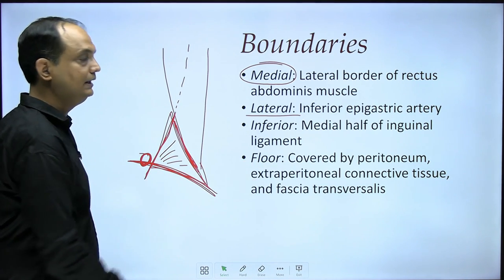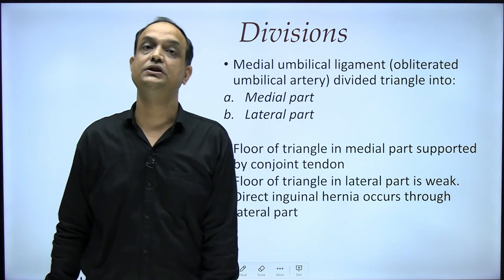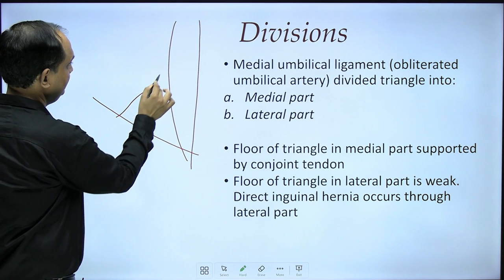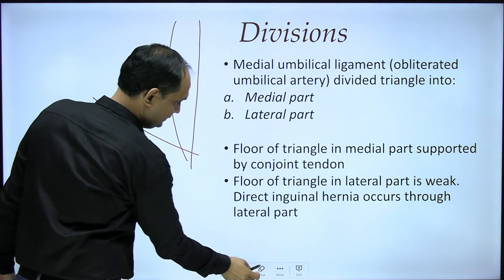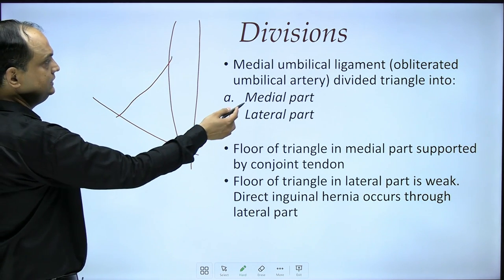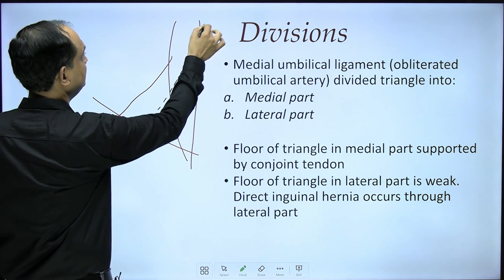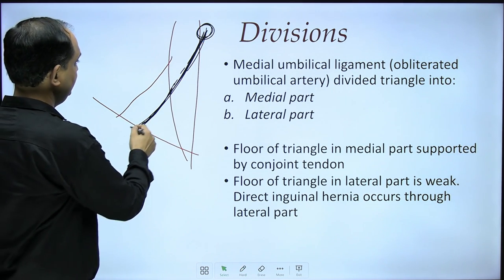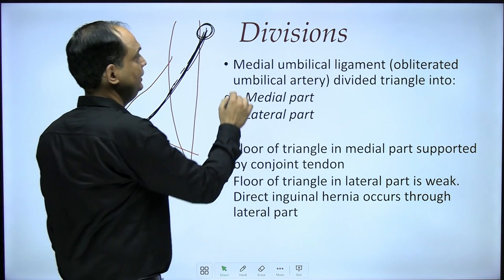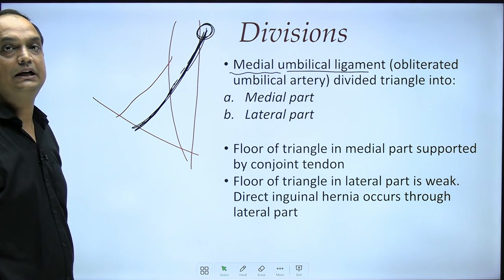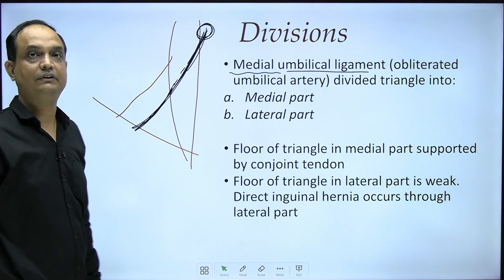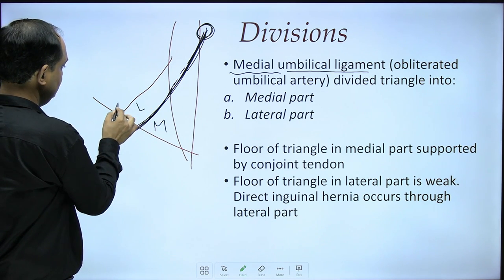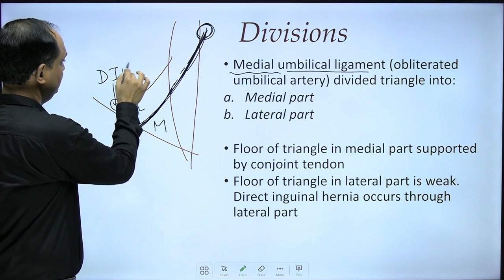The floor of Hesselbach's triangle is covered by peritoneum. The triangle is further divided into two parts by the obliterated umbilical artery, which runs from the pelvis toward the umbilicus and forms a fold called the medial umbilical ligament. This divides Hesselbach's triangle into a lateral half and a medial half. The deep inguinal ring lies just lateral to this artery.